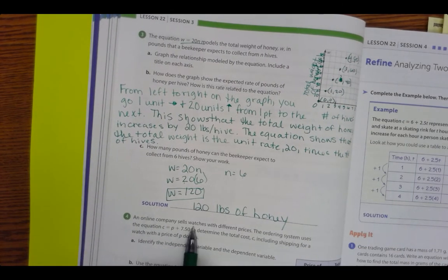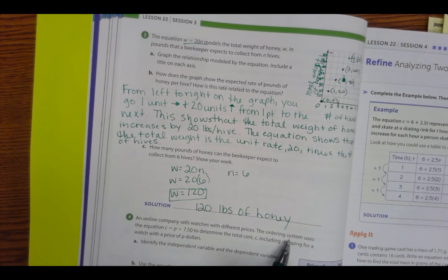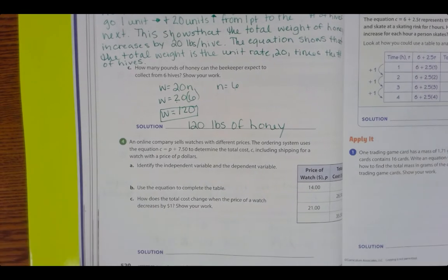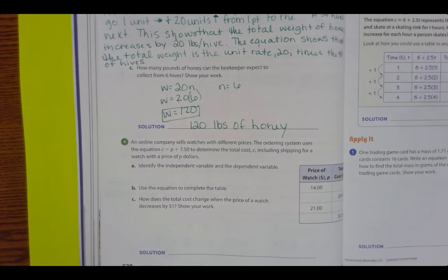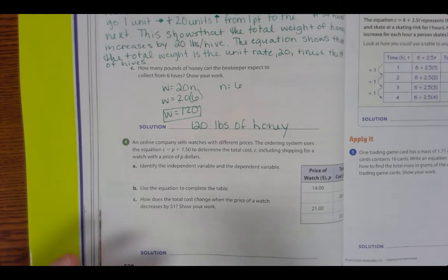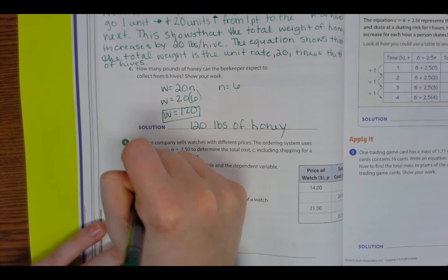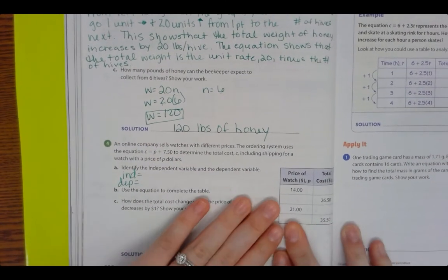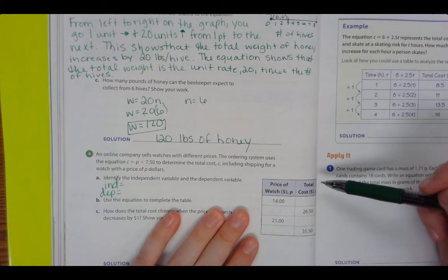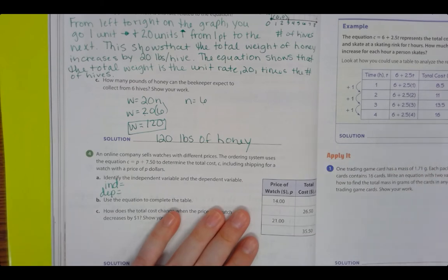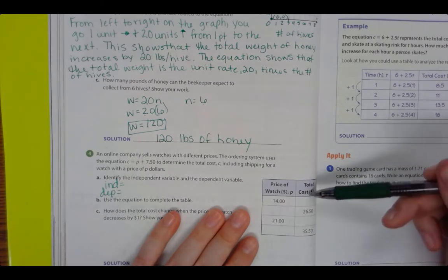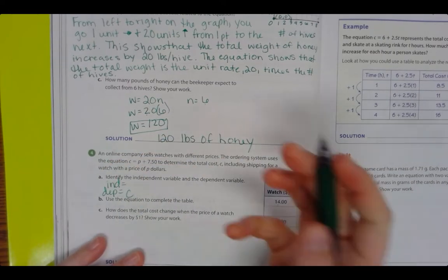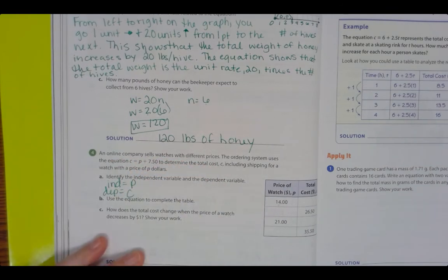All right, number 4. An online company sells watches with different prices. The ordering system uses the equation C equals P plus $7.50 to determine the total cost C including shipping for a watch with the price of P amount of dollars. Identify the independent variable and the dependent variable. So does the price of the watch depend on the total cost or does the total cost depend on the price of the watch? The total cost depends on the price of the watch. The price of the watch is independent.